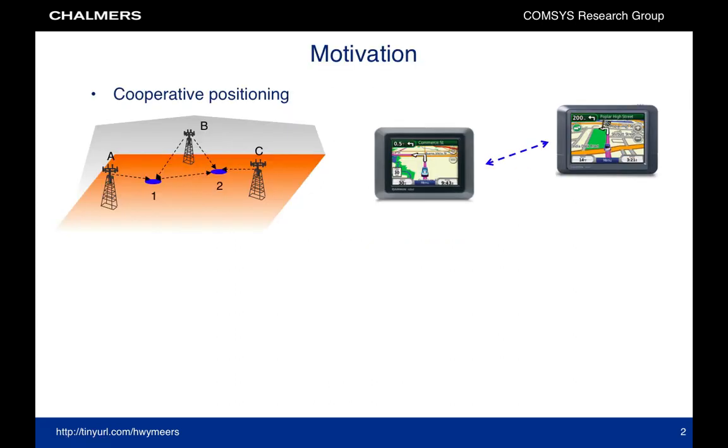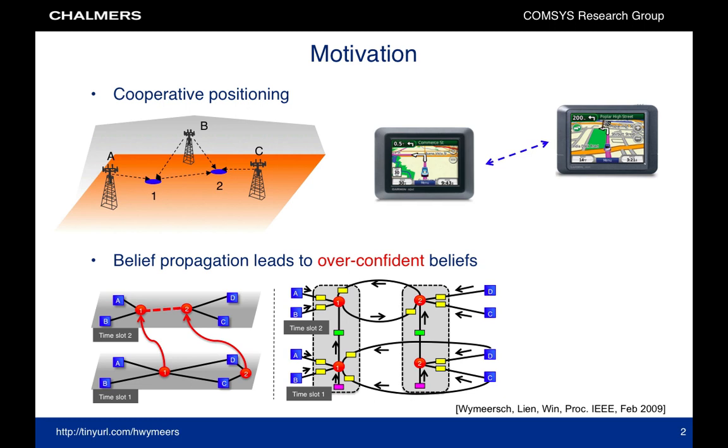Our motivation for this work stems from our research in cooperative navigation where devices such as GPS receivers help each other in navigating. This problem can be cast as a statistical inference problem and solved by performing belief propagation on a factor graph that spans over space and time. Belief propagation has a drawback that the beliefs may be overconfident or overly concentrated, so that devices will in fact mislead their neighbors.